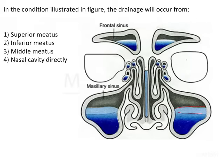For the maxillary sinus, what they are asking is where is the opening of the maxillary sinus so that there is drainage from that particular region. As we all know, the maxillary sinus opens into the middle meatus on the lateral wall of the nose. So the answer is middle meatus.